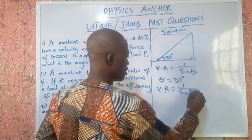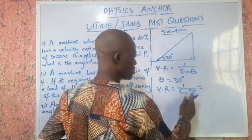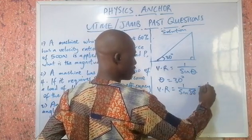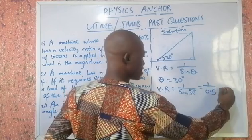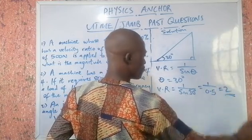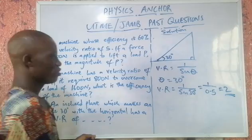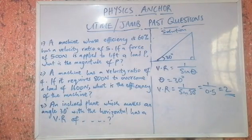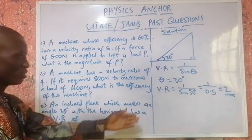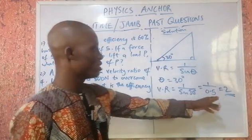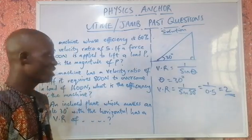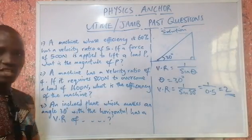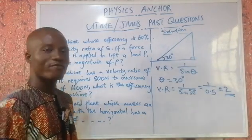With theta equal to 30 degrees, VR equals 1 over sine 30. Sine 30 equals 0.5, so VR equals 1 over 0.5, which gives us 2. Velocity ratio has no units, so the answer is simply 2. It's the simplest of the three, but if you don't remember the formula, you'll miss the mark in the exam.